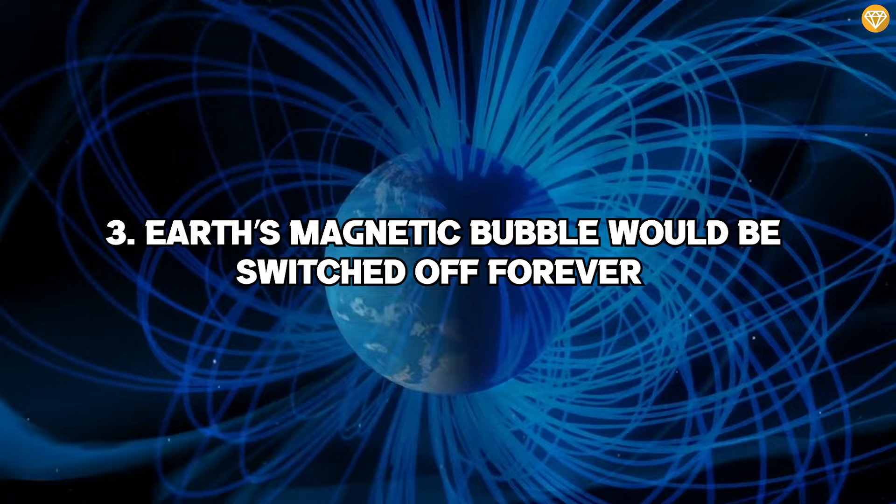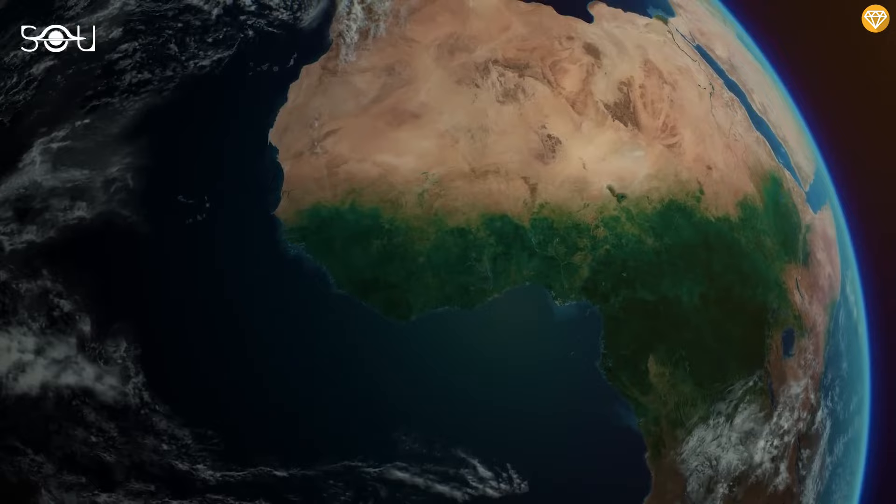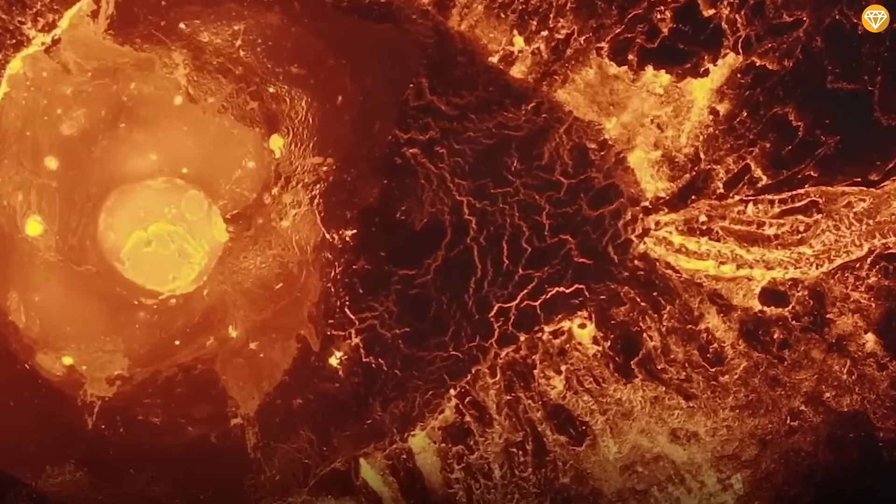3. Earth's magnetic bubble would be switched off forever. Earth's magnetic field, created by the geodynamo, is crucial for life as it shields us from solar wind and harmful radiation. The geodynamo is sustained by the moon's tidal forces, which keep the Earth's core hot and in motion.